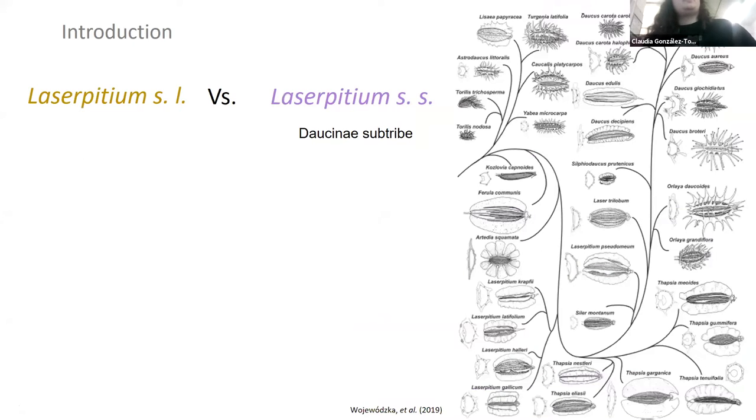The basic problem with the systematics of Laserpitium is that since it was first described, there were two completely different concepts of Laserpitium. We have Laserpitium sensu lato, which is in a wide sense and allows a wider range of morphological variation.